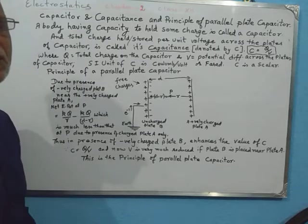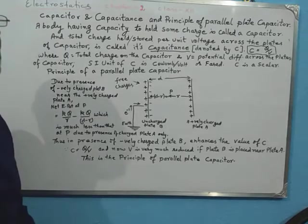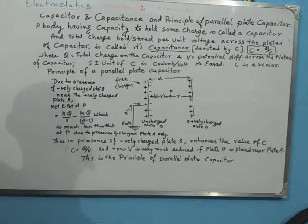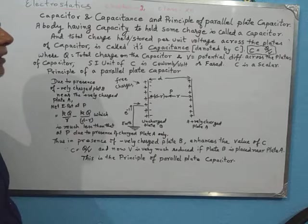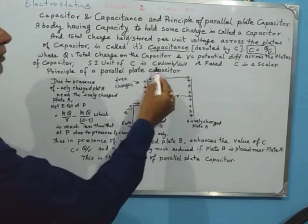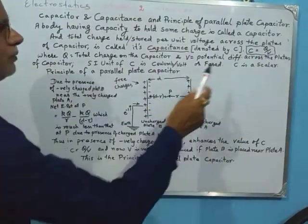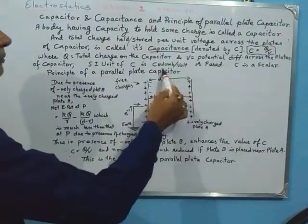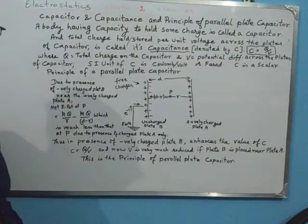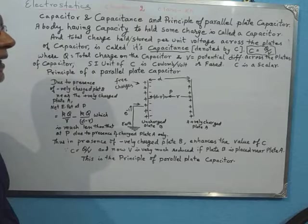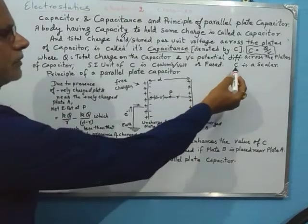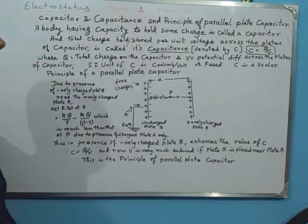More charge accumulated for a smaller unit of potential difference means greater capacitance. The SI unit of capacitance is coulomb per volt, since charge is in coulombs and V is in volts. Coulomb per volt is also known as farad, named in honor of the great scientist Faraday. Capacitance is a scalar quantity.